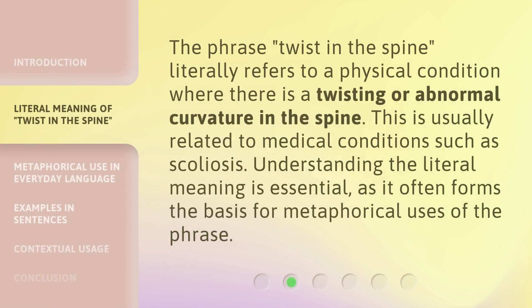The phrase 'twist in the spine' literally refers to a physical condition where there is a twisting or abnormal curvature in the spine. This is usually related to medical conditions such as scoliosis. Understanding the literal meaning is essential, as it often forms the basis for metaphorical uses of the phrase.